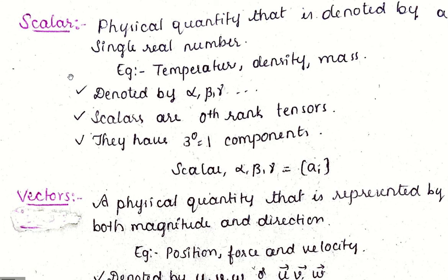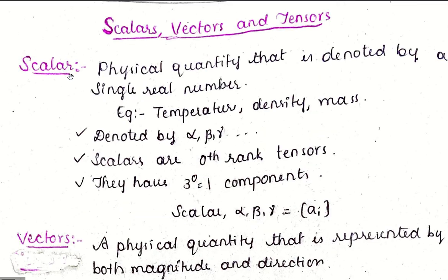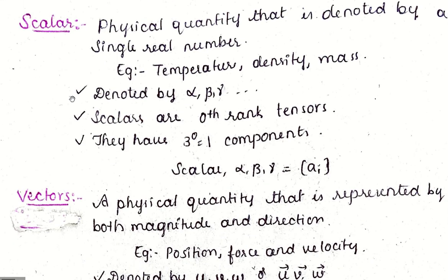In this video we shall see what is scalar, what is vector, and what is tensor. A scalar, from our school level basics, is a physical quantity that is denoted by a single real number. We can say it has some magnitude but no direction. For example, temperature, density, and mass can be